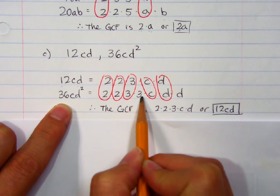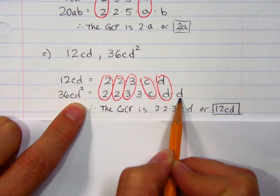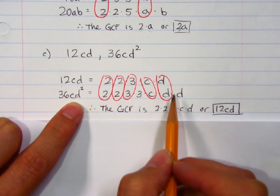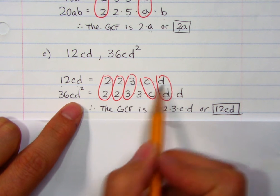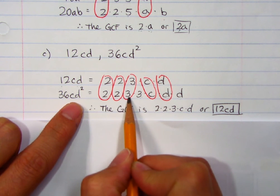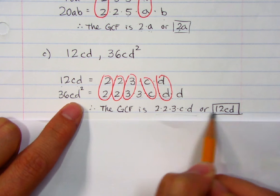4, 12, 36. cd squared. d squared is there's two d's there. Okay, let's go matching game. 2 and 2, 2 and 2, 3 and 3, c and c, d and d. So there's a 2, a 2, a 3, a c and a d in common. And so that's 12cd.